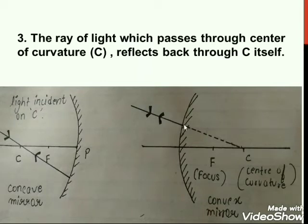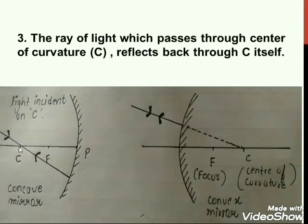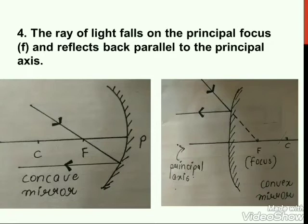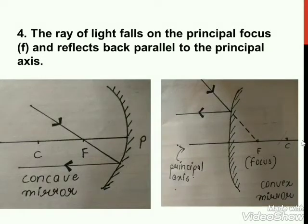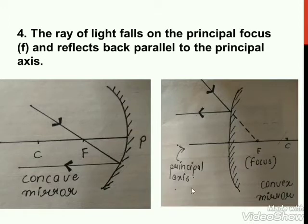Third rule for convex mirror: when a ray of light falls on the convex mirror directed toward the imaginary centre of curvature, it gets reflected back in the same direction. Fourth rule — opposite of the first: when light is incident toward the virtual focus shown by dotted lines, it gets reflected back parallel to the principal axis. Since the focus is virtual and behind the mirror, dotted lines are used to show it.